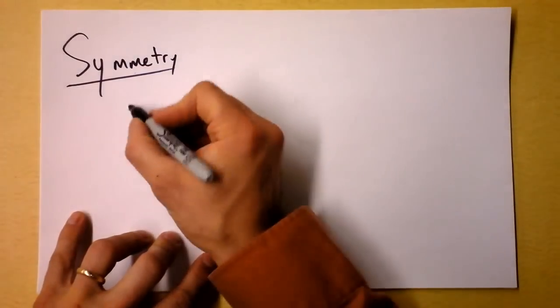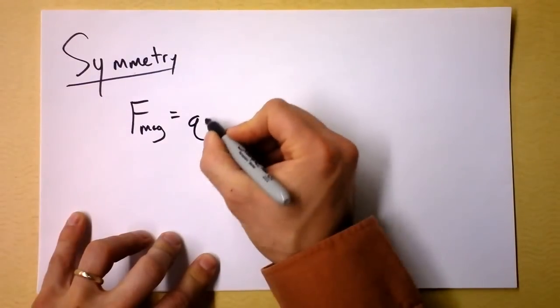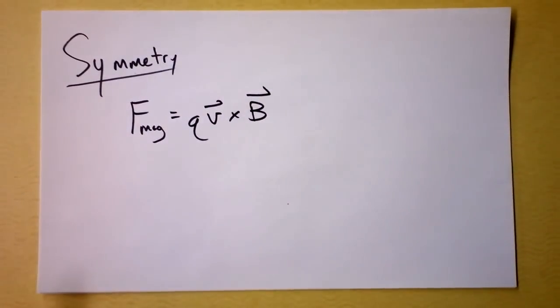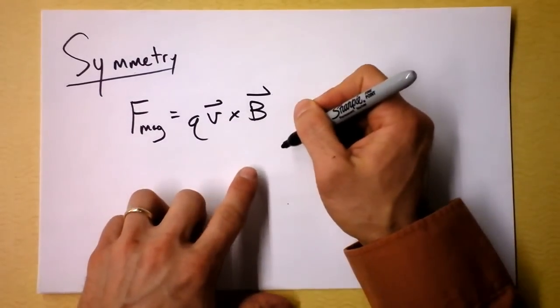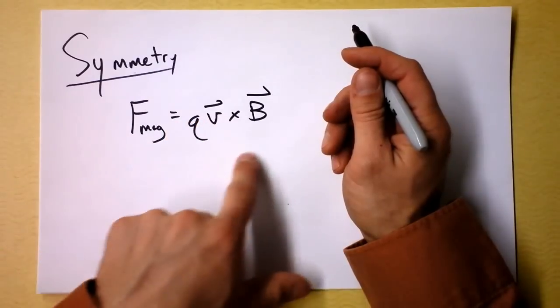So, another example of symmetry, get ready, you already know that there's a magnetic force on charges that move in a magnetic field in the right direction. So, I don't think it should come as too much of a surprise that if charges move, they actually create a magnetic field.